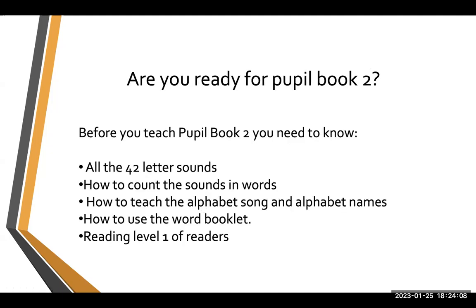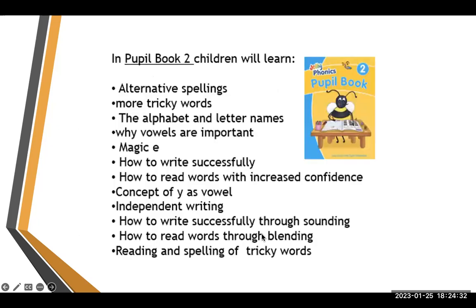Before you teach Pupil Book 2, you need to check if the child is ready. The child should have knowledge of all 42 letter sounds, how to count sounds in words, how to use the alphabet song and alphabet names, how to use the word booklet, and Reading Level 1 of the readers as discussed.